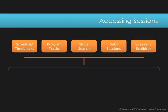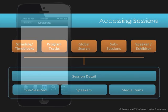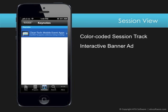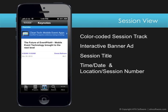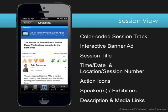Once in a session detail view, you have access to other items such as sub-sessions or abstracts, speakers, exhibitors, and media items. The session view consists of first displaying the color-coded session track, then any ads if you have purchased the sponsorship module, the session title, the time and date, the location which is interactive when it's mapped, a session number, an icon bar with different actions for the user, one or more speakers or exhibitors with the option to drill down and learn more, and of course the session description.